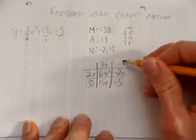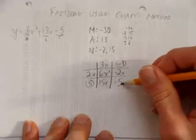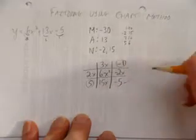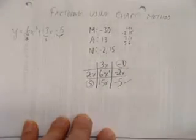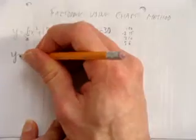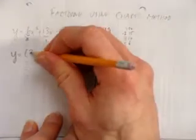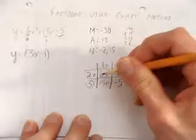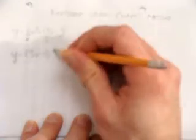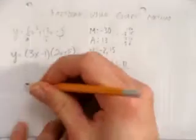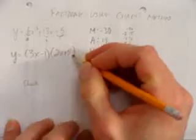If I've done all that right, my corners, 5 times negative 1, should multiply to negative 5, which they do. I'm pretty confident I'm correct. My factored solution, I'm going to read this top row, is 3x minus 1, and then this column, 2x plus 5. I can always check my work by expanding those brackets.